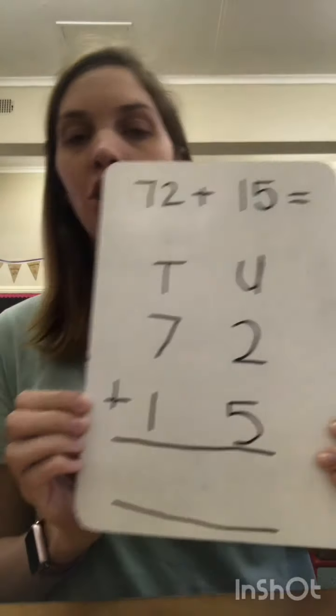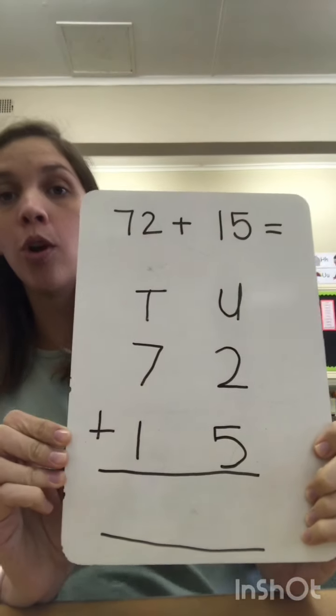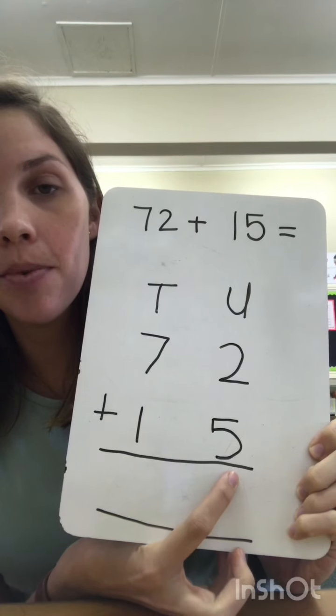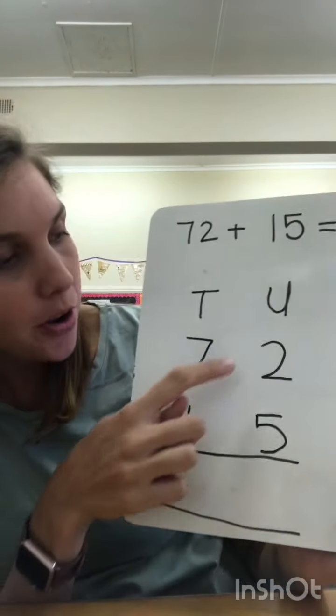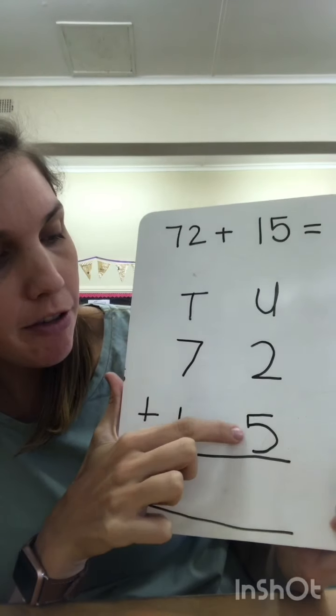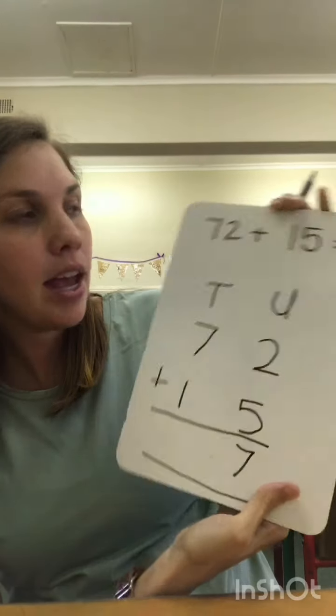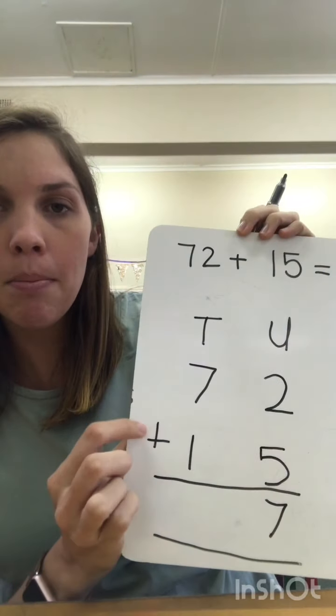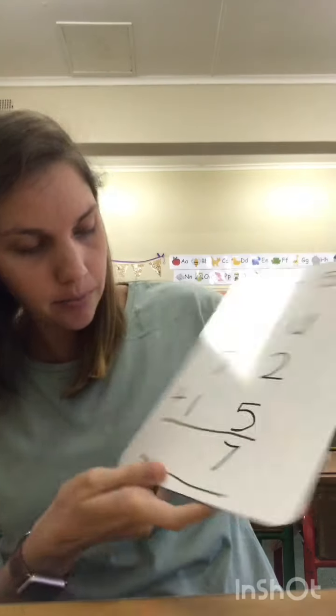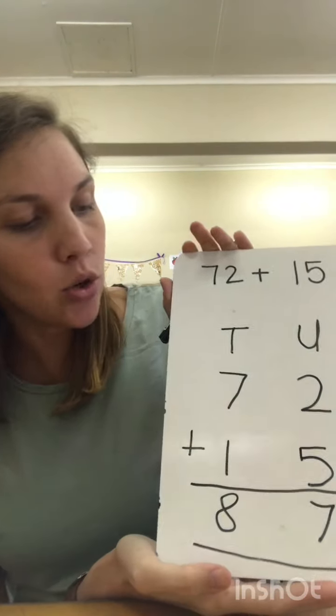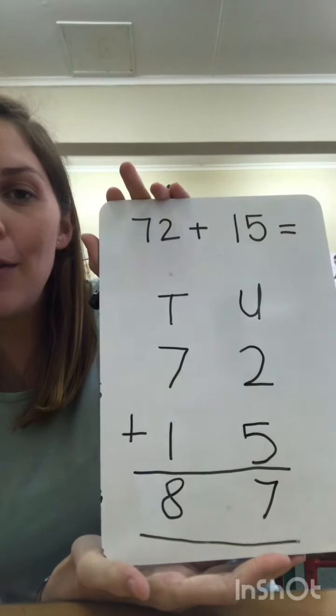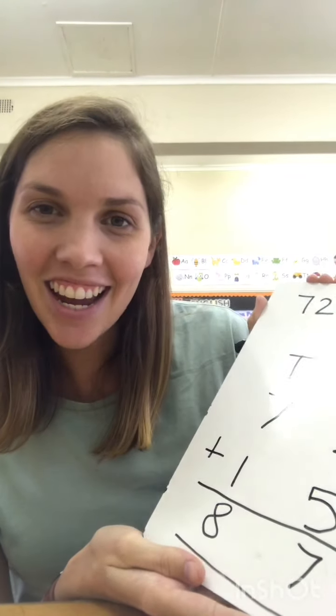And now I'm ready to go. So what do we always start with? Our units column. We need to remember that it's a plus sign, and let's go. So we've got a 2 plus 5 gives us 7, and 7 plus 1 gives us 8. So 72 plus 15 equals 87. So nice and easy, hey? That's all there is to it.